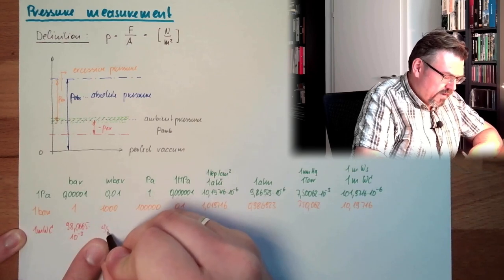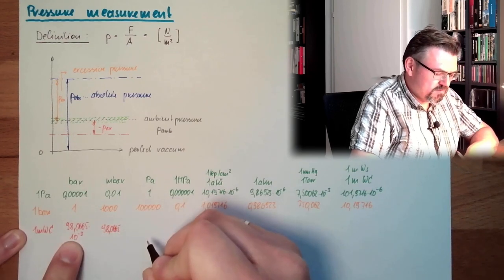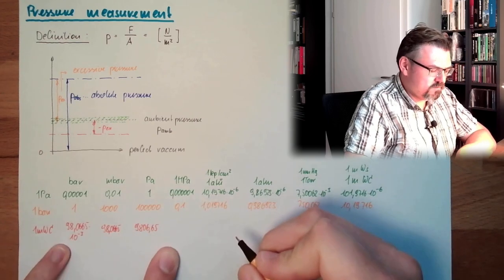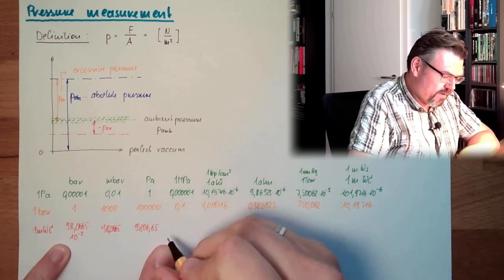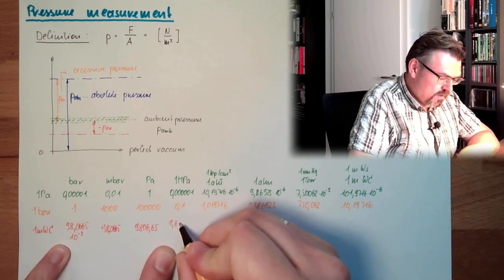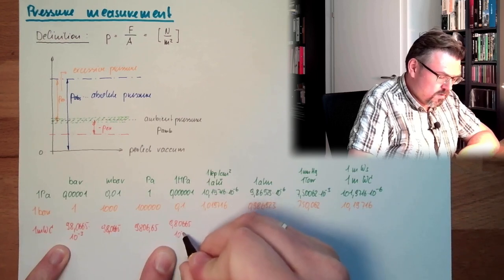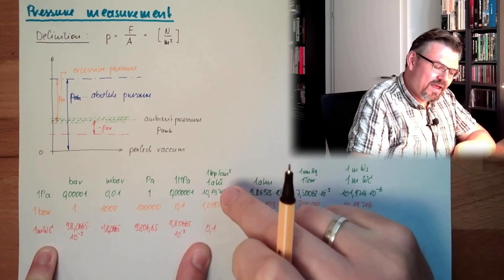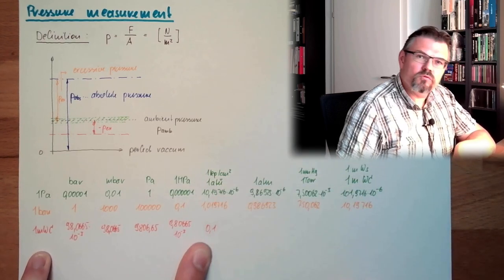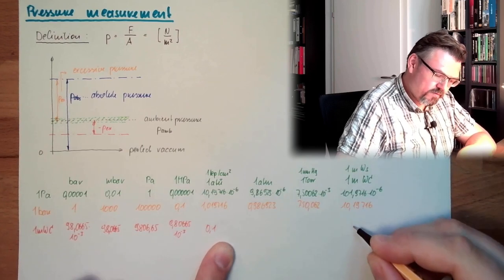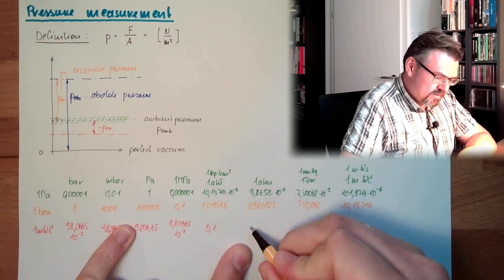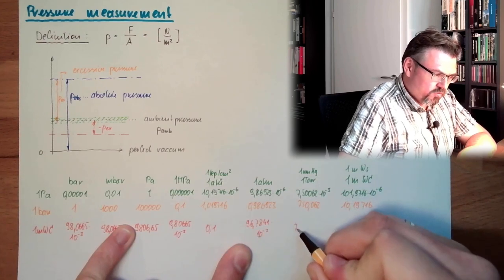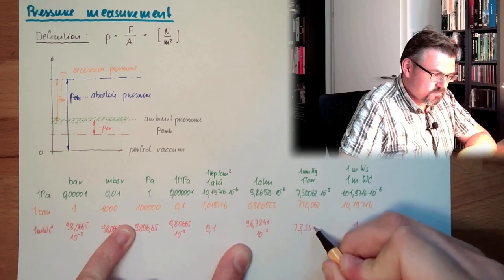How many bars is this? This is 0.0980665. How much millibar? 98.0665, of course. Then Pascal is 9806.65. Megapascal, 0.000009806. And now here Atmosphärenüberdruck, 0.1. So 10 meter water columns is 1 atü. Here we have 0.0967841 atmospheres.